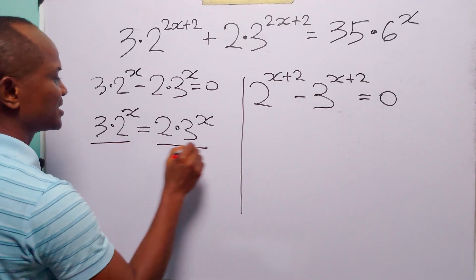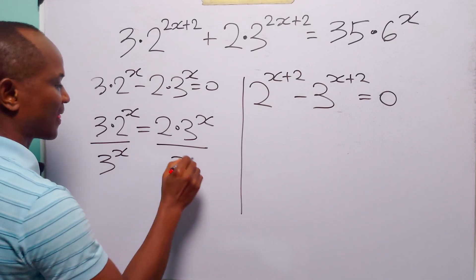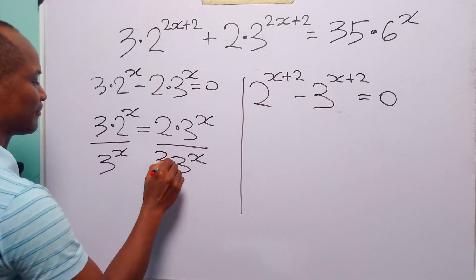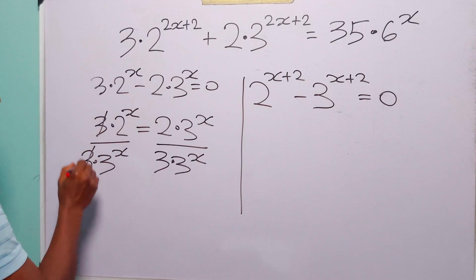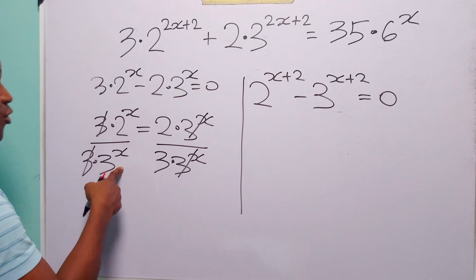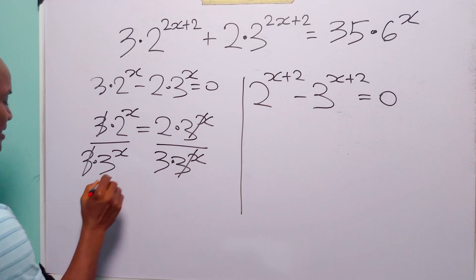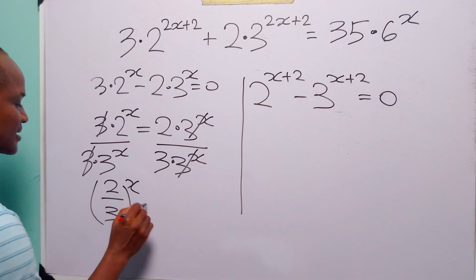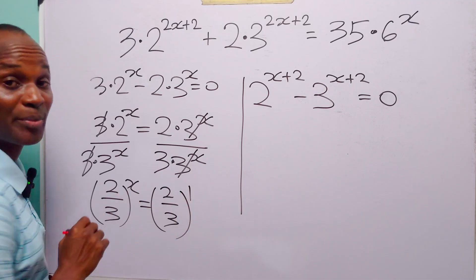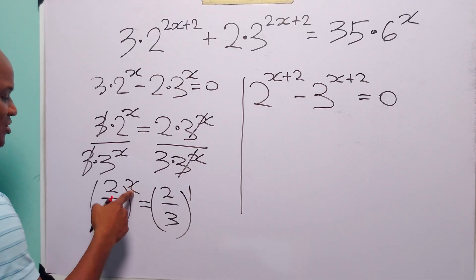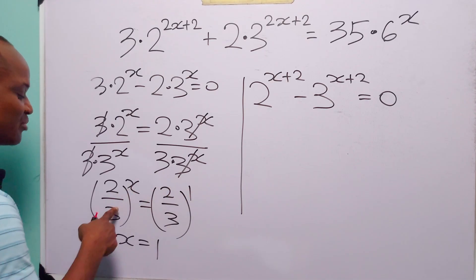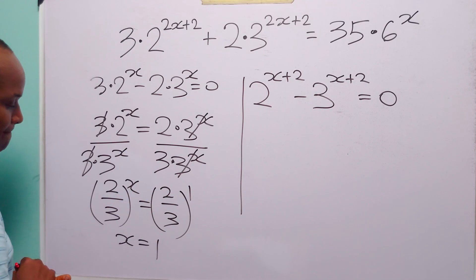We divide both sides by 3 to the power x and by 3. This cancels terms and leaves us with 2 to the power x over 3 to the power x, which we write as (2/3) to the power x, equal to 2/3, which is (2/3) to the power 1. Comparing both sides since the bases are the same, we equate exponents and get x equals 1.